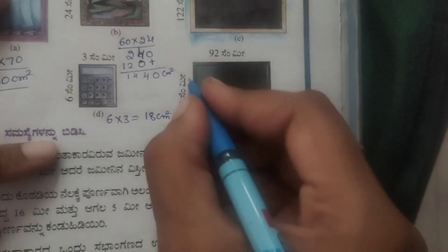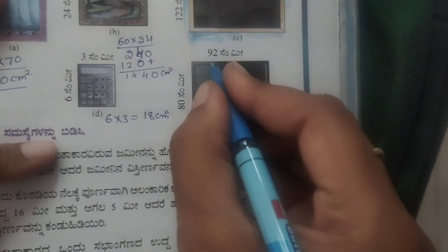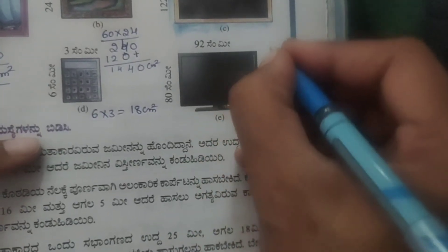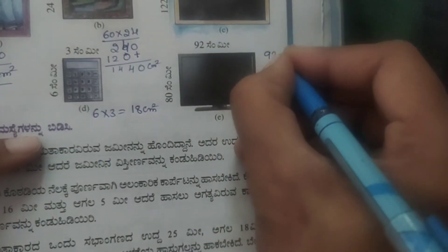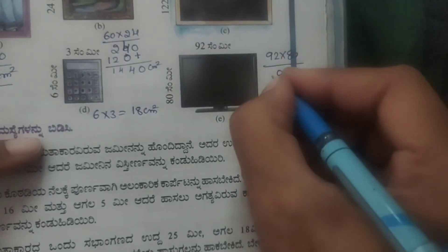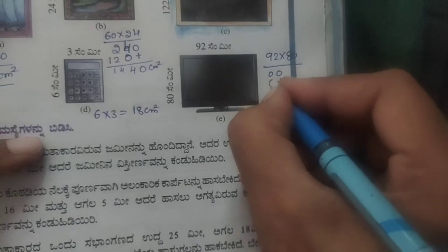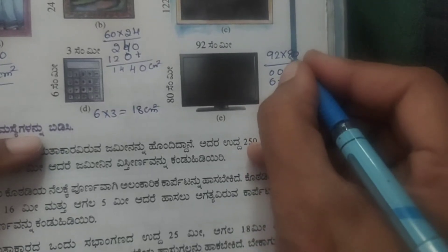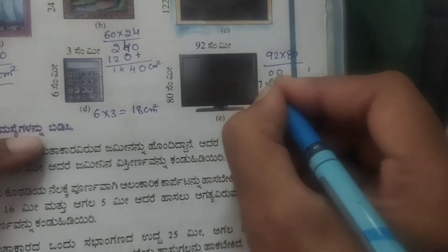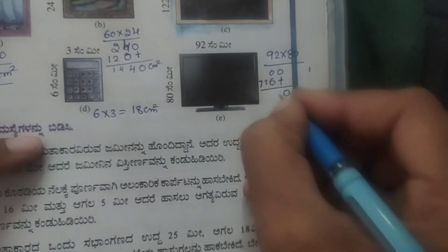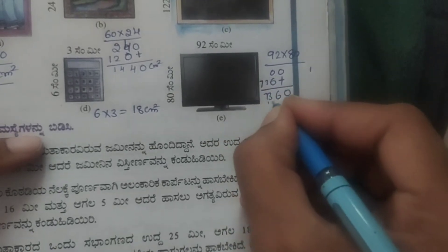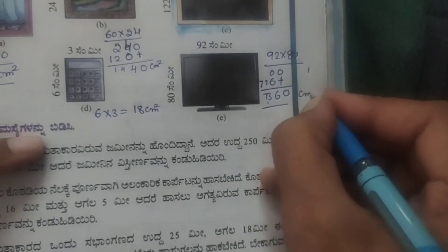Next: breadth is 80 cm and length is 92 cm. That is 92 into 80. Calculating: 8 twos are 16, 8 nines are 72 plus 1 is 73. So the answer is 7,360 cm².